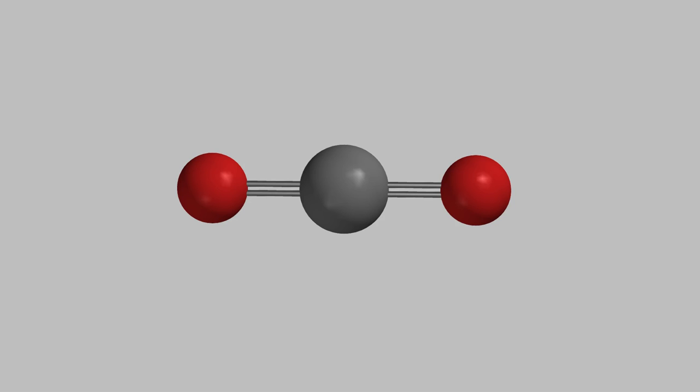As you can tell, the angle between the bonds is 180 degrees, and a molecule with this shape is said to be linear.